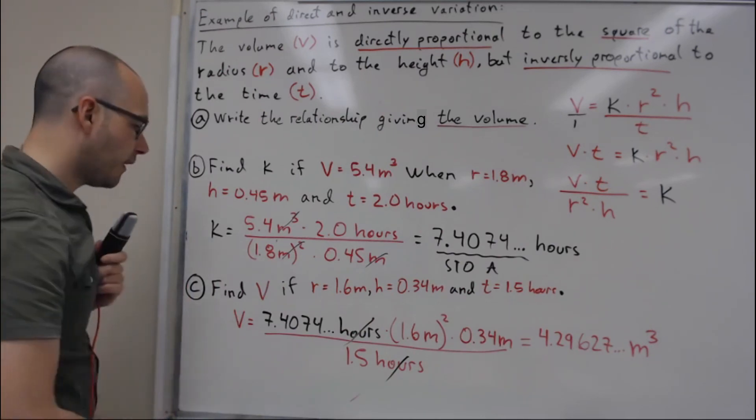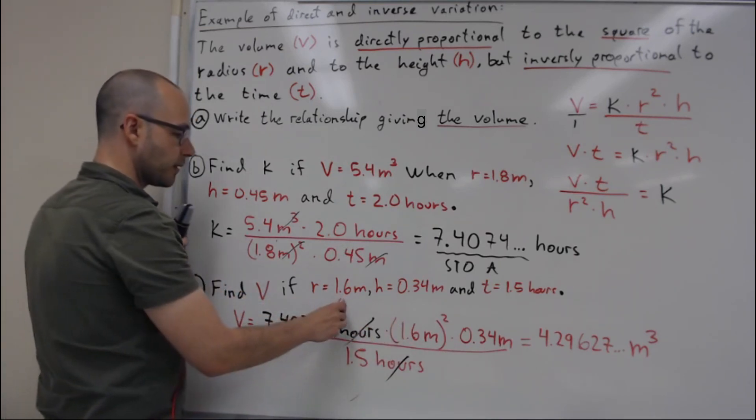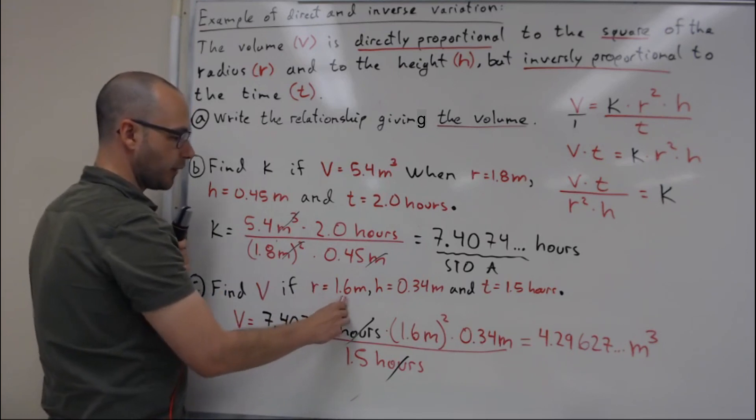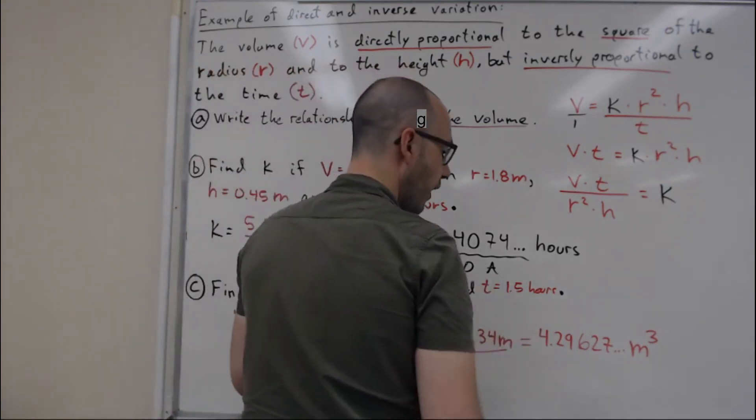If I count my sig figs here, I got two, two here, two here, so I have to round that to four point three meters cubed.